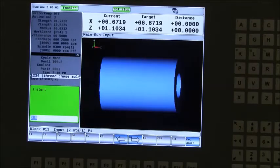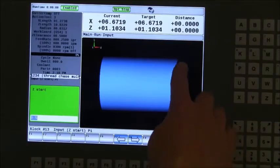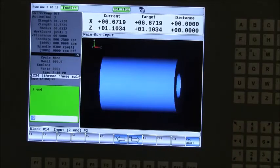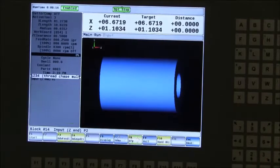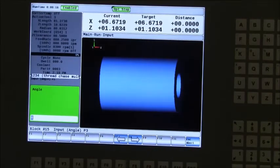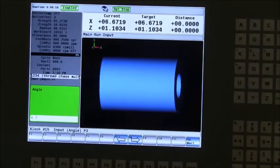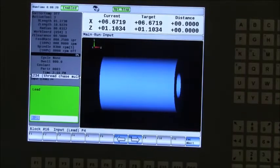Now it's going to ask you a few questions: what your Z start point is. We'll start at positive 0.5. Z zero is the face of the part. Z end, the angle of your thread - this one is 4.7. Lead, this is 4 threads per inch, so the lead would be 0.25.